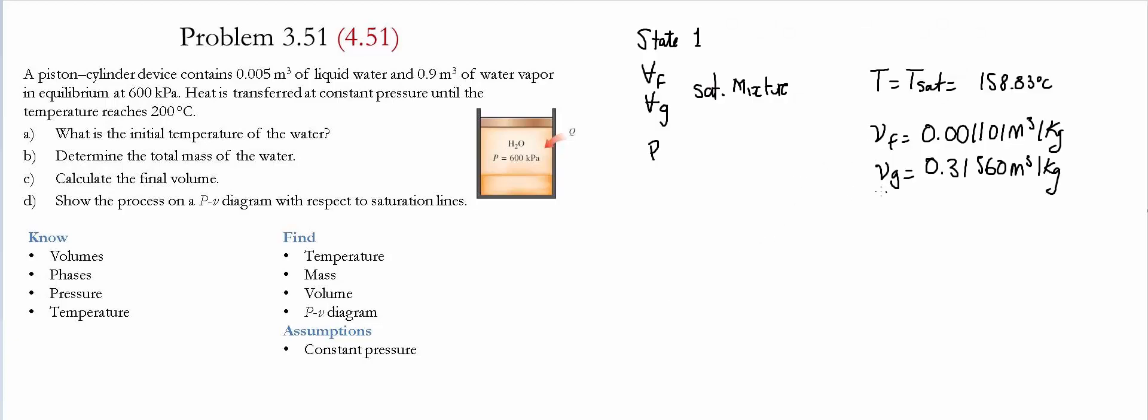Once we have the values of the specific volumes, we're able to find the masses of each phase. The mass of the liquid part is going to be the total volume of the liquid divided by the specific volume of the liquid, and this is going to give us 4.543 kilograms.